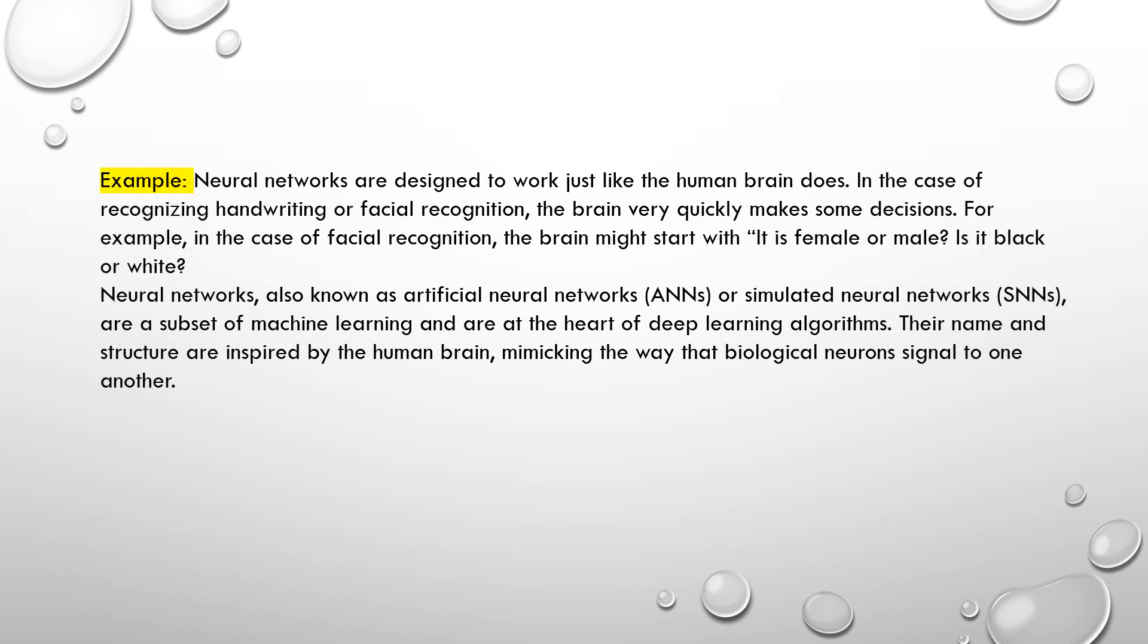For example, neural networks are designed to work just like the human brain does in the case of recognizing handwriting or facial recognition. The brain very quickly makes some decisions. For example, in the case of facial recognition, the brain might start with: is it female or male, is it black or white?